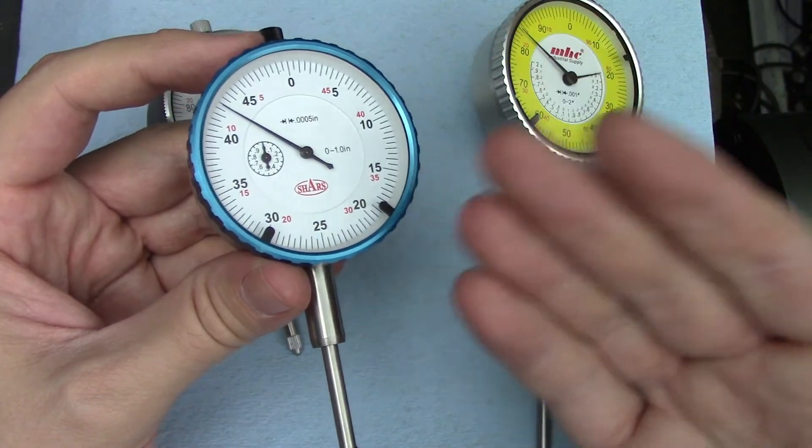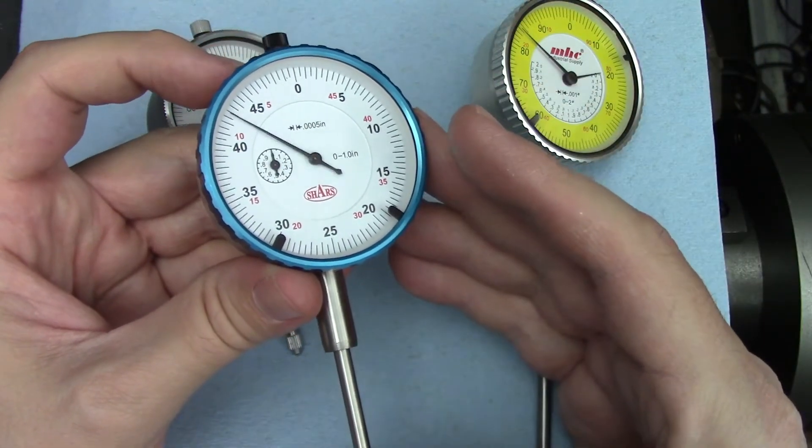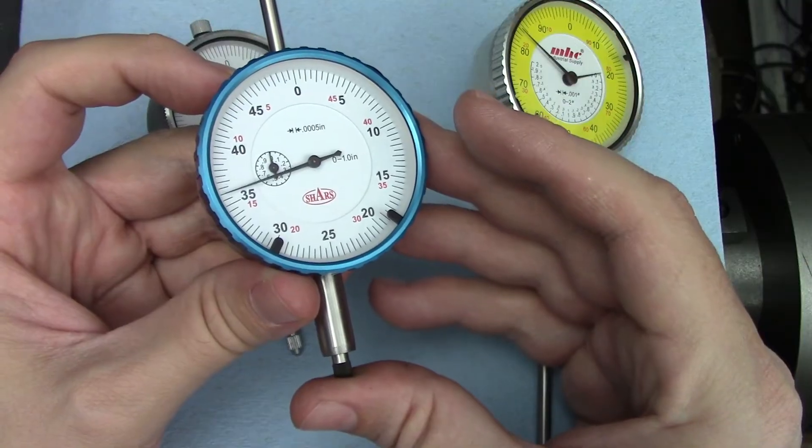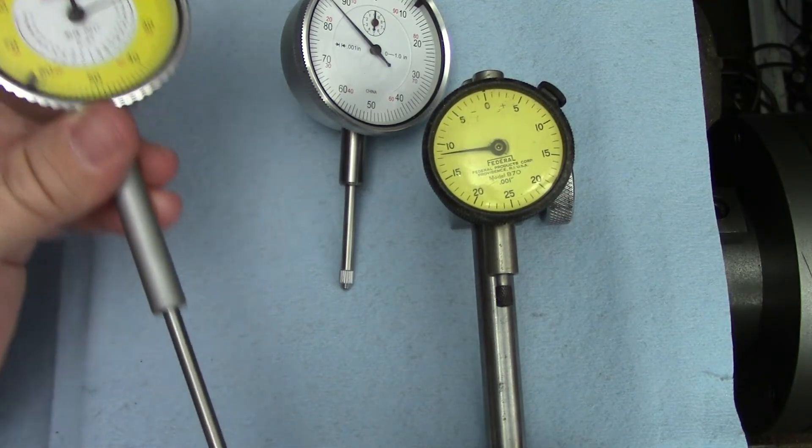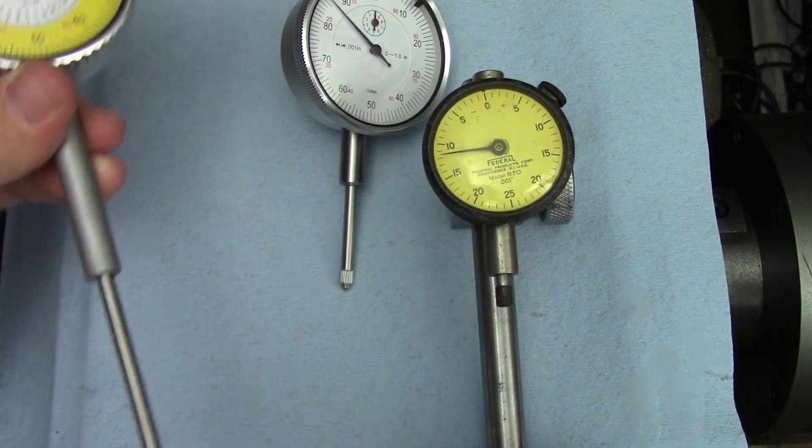Likewise, this relatively fine half thousandths drop type indicator actually has an entire inch of travel. You can easily find thousandths indicators with travels anywhere from two inches to a quarter of an inch.